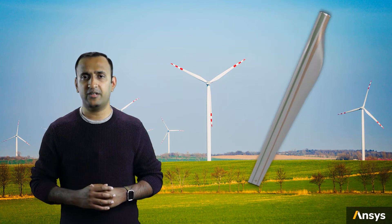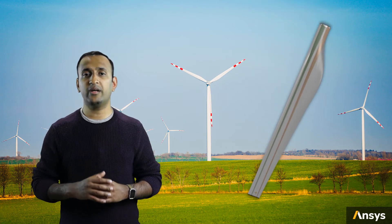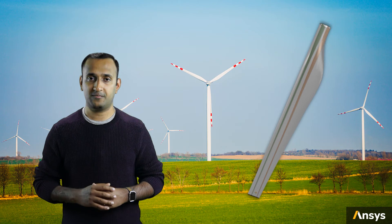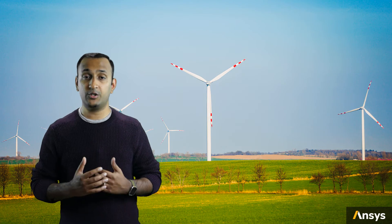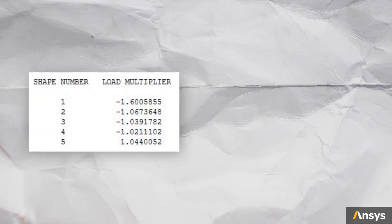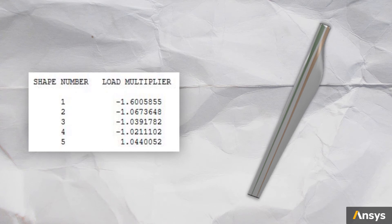So, based on that analysis, let's add some stiffeners along its length in order to increase the load at which it buckles. Now, let's perform a similar analysis with this new design. Here are the load multipliers for the new design. We can see that they have almost doubled from the previous design, which implies that adding those stiffeners has indeed improved the buckling performance of the blade.